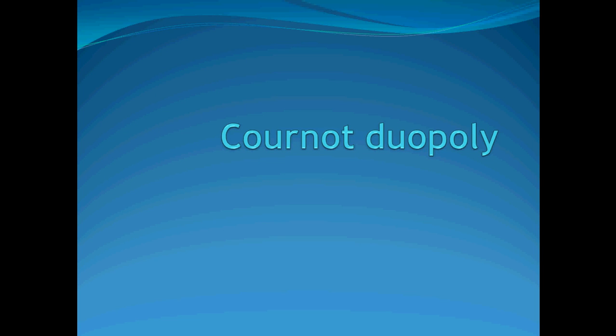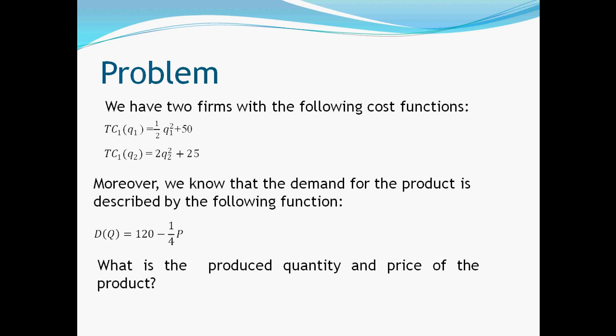Hello everyone, today we are going to talk about Cournot Oligopoly. In this case we have two firms in the market and we know their cost functions, namely the total cost function of firm number 1 and the total cost function of firm number 2. Furthermore, the market demand for the product is also known.